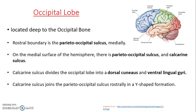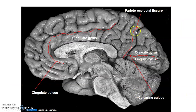The occipital lobe is located deep to the occipital bone and is usually separated from the parietal lobe by the parieto-occipital sulcus, viewed on the medial surface of the hemisphere. This parieto-occipital sulcus forms a Y-shape with the calcarine sulcus. The calcarine sulcus divides the occipital lobe into a dorsal cuneus and a ventral lingual gyrus. The parieto-occipital fissure divides the occipital from the parietal lobe, while the calcarine sulcus divides the ventral lingual from the dorsal cuneus.